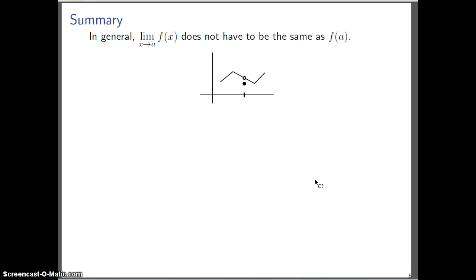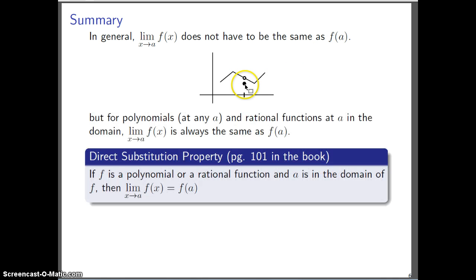All right, just to summarize, in general when you look at a function, the limit does not have to be the same as the y value of the function at a, and here's an example just in terms of a cartoon. Here's just a graph of some function where the limit would be this y value that's up here, but the actual value of the function that's this part would be this lower y value down here. However, if you're looking at rational functions or polynomials, as long as you're looking at rational functions for a in the domain, then these two numbers are always the same, and this is what the book calls the direct substitution property.